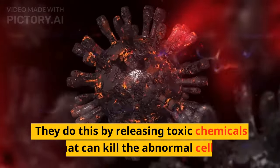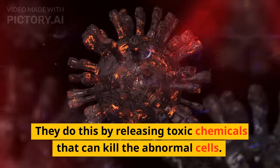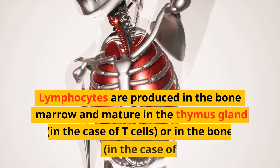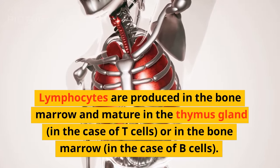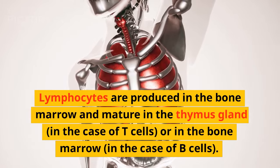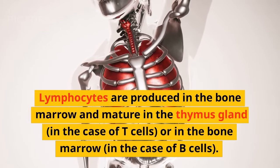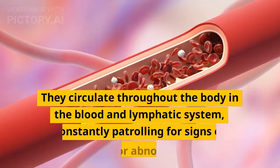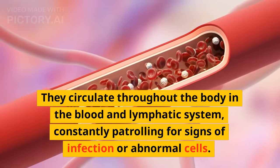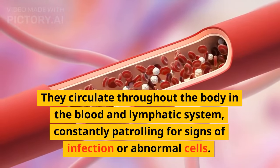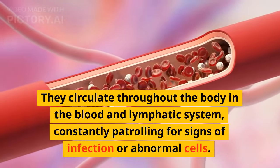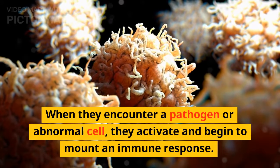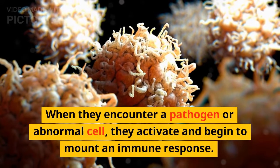Natural killer cells are able to identify and destroy cells that have become infected with viruses or cancer cells. They do this by releasing toxic chemicals that can kill the abnormal cells. Lymphocytes are produced in the bone marrow and mature in the thymus gland, in the case of T-cells, or in the bone marrow, in the case of B-cells. They circulate throughout the body in the blood and lymphatic system, constantly patrolling for signs of infection or abnormal cells. When they encounter a pathogen or abnormal cell, they activate and begin to mount an immune response.